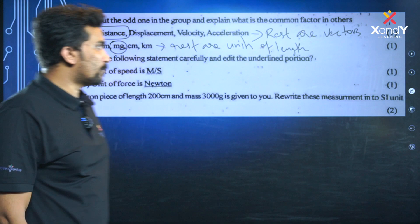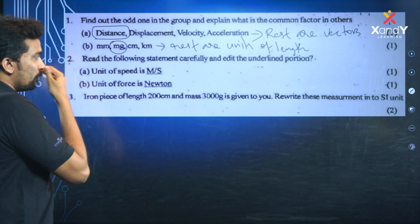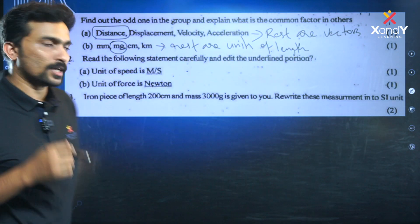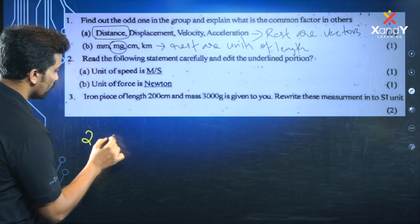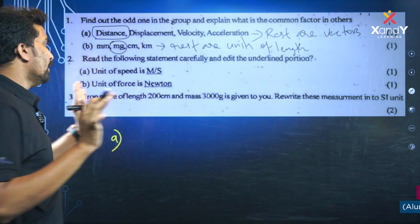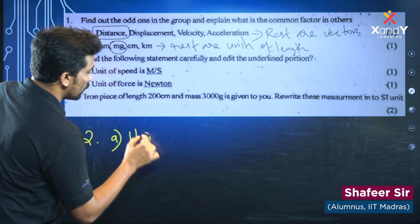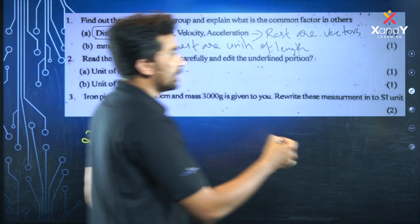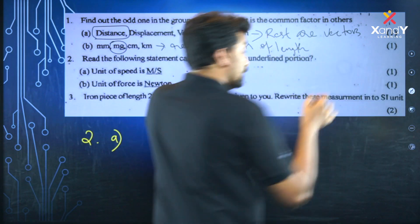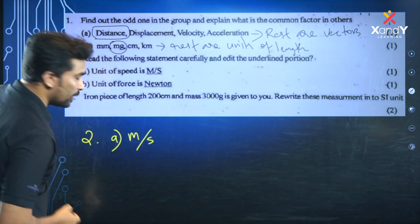Read the following statement carefully and edit the underlined portion. The statement says the unit of speed is meter per second. The answer for the symbol is m/s — meter per second. When writing the symbol, 's' for second must be written in small letters, not capital.